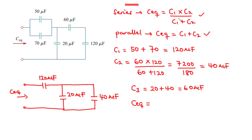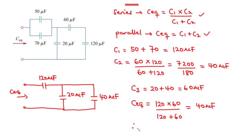For the series combination, the equivalent capacitance equals 120 times 60 divided by 120 plus 60, which gives 40 microfarads. Therefore, the equivalent capacitance seen between the two terminals is 40 microfarads.